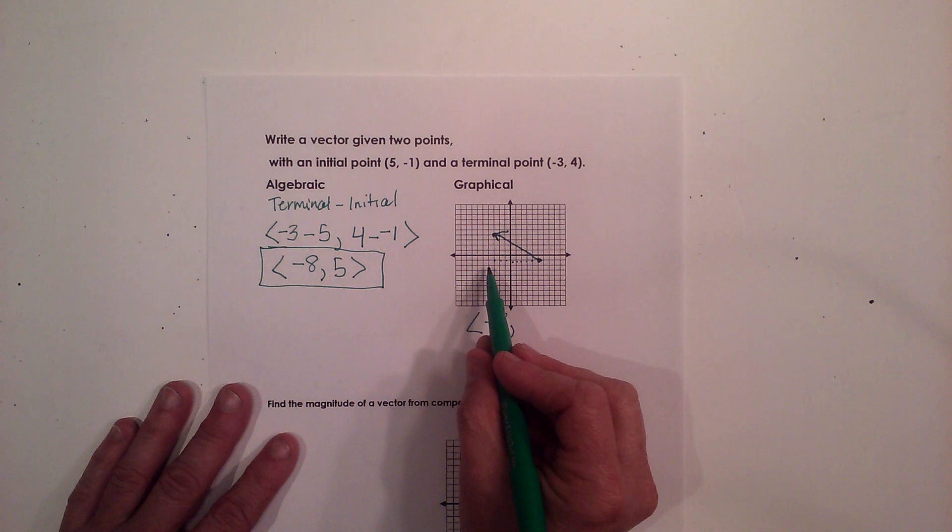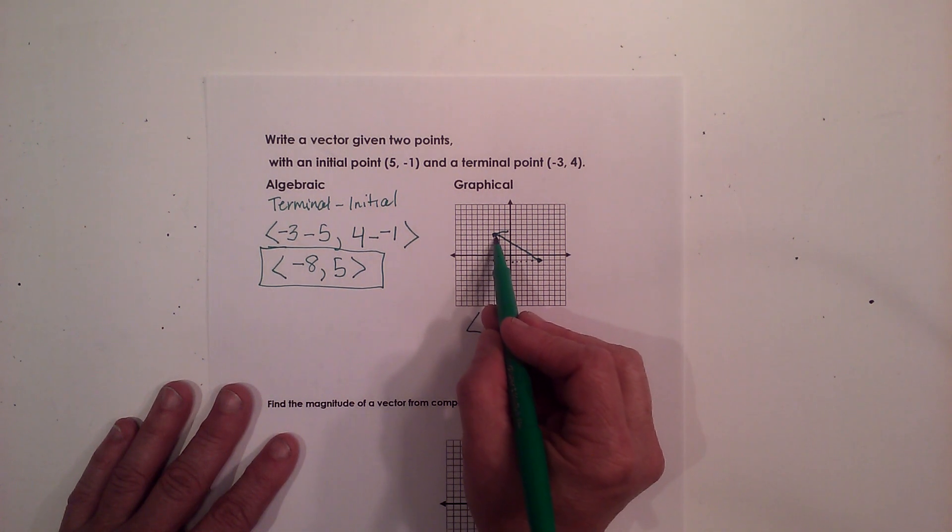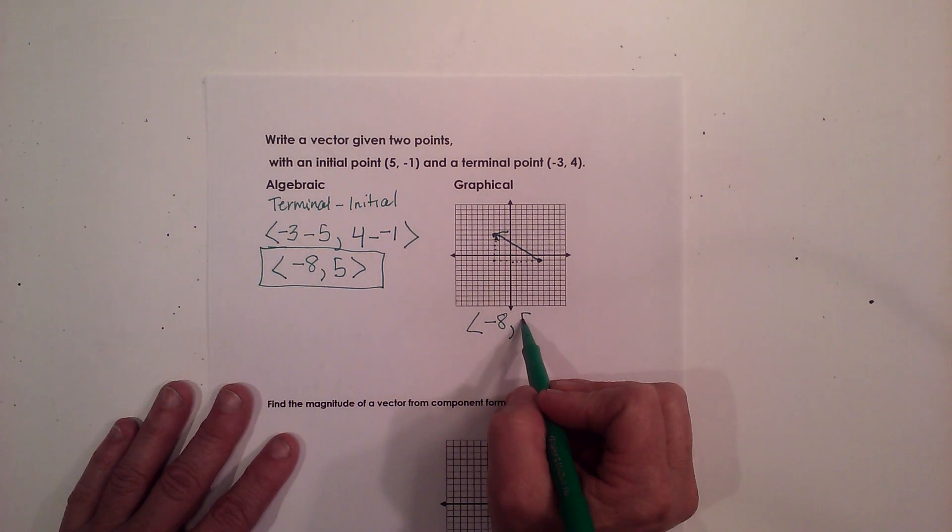And then I'm going to go 1, 2, 3, 4, 5, up 5 in the vertical direction, therefore it is positive 5.